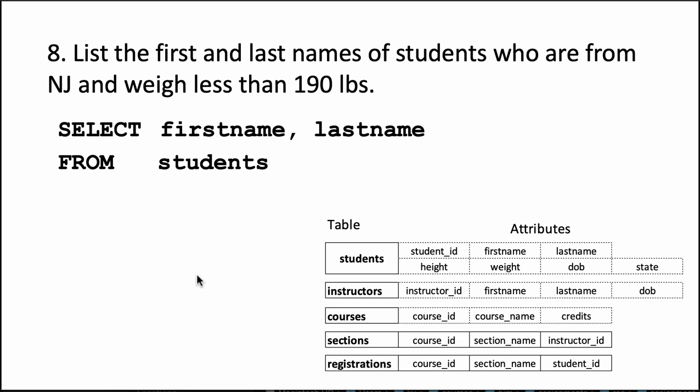Obviously since we are filtering the students we need a WHERE clause, and the WHERE clause is going to look like this: state = 'NJ', this time it's AND not OR, and then we say weight < 190.